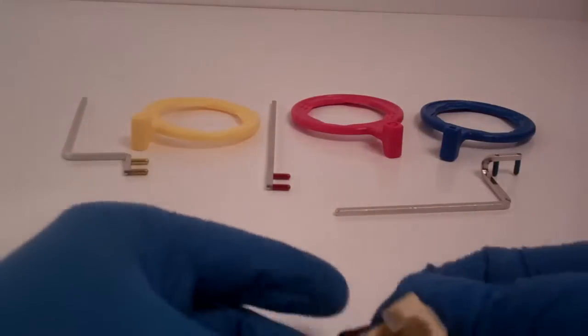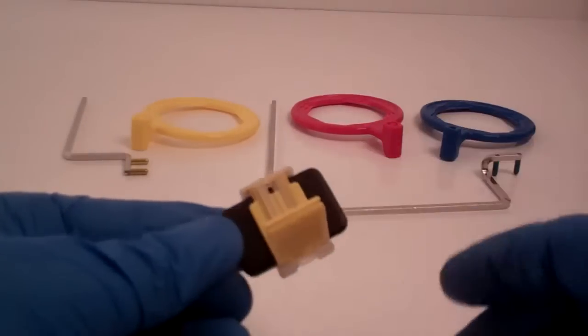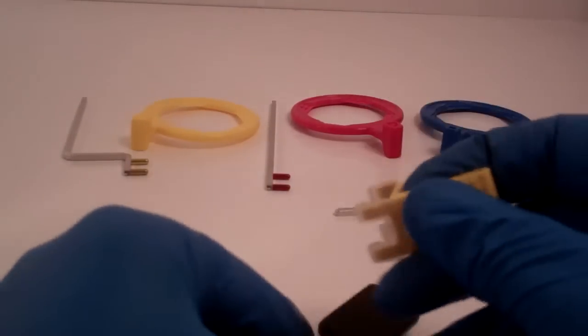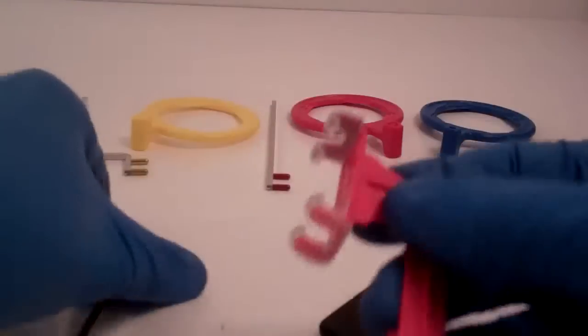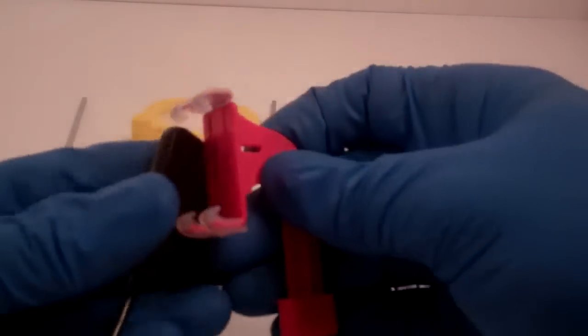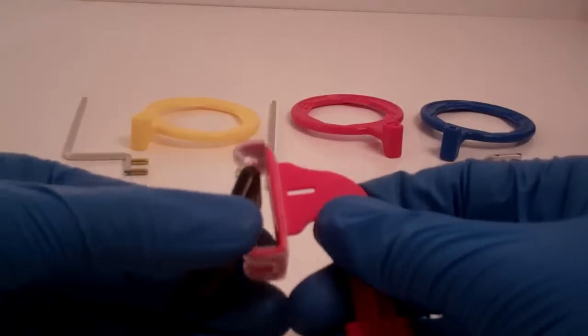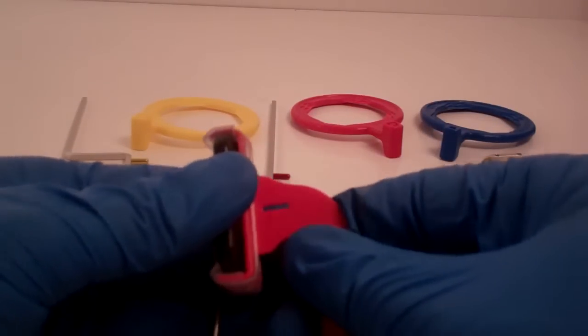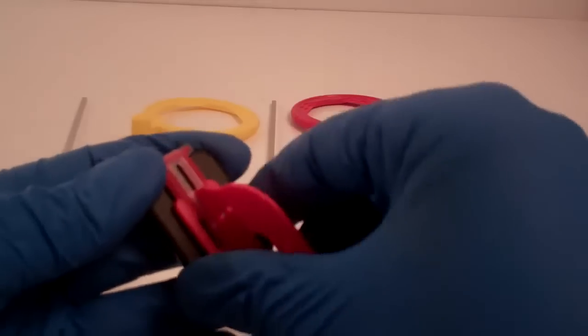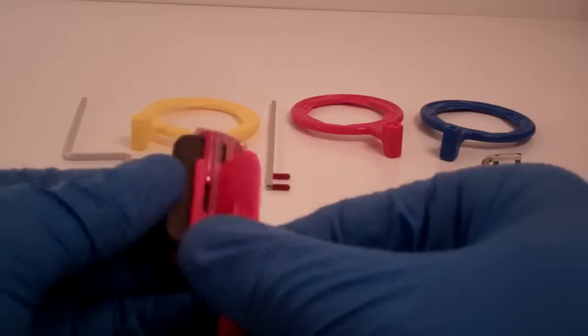And the same holder works with a size 1 or a size 2. There it is in the size 1. There is a horizontal bite wing piece. And again, it's very fast loading. You just use the edge of the sensor to lightly press up and center it in the bite block and you're ready for an image.